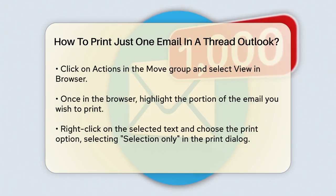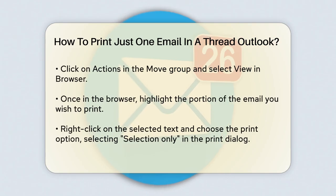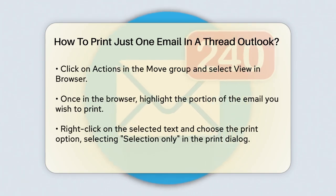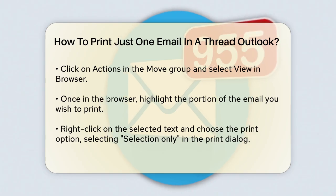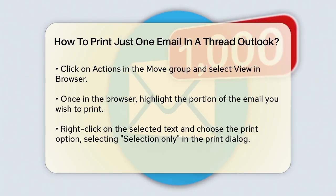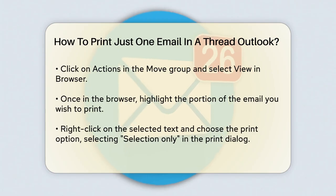This will open the email in your default web browser. Once the email is open in the browser, select the part of the message you want to print. Right-click on the selected text and choose the Print option. In the Print dialog, select 'Selection Only' or a similar option to print just the part you've selected.